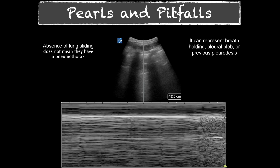This is an M-mode demonstration showing the barcode sign. Below the pleural line, we see no movement — this does not mean pneumothorax. Absence of lung sliding can represent breath holding, a pleurobleb, or prior pleurodesis. It can be a pneumothorax, but you need to search for a lung point to confirm that diagnosis.